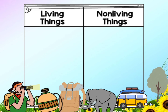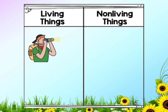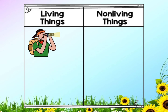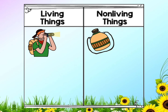Let us start. This is a man — a human. He does the seven life processes, so he is a living thing. Very good. Look at the second one: a water bottle. It doesn't do the seven life processes, so it is a non-living thing.